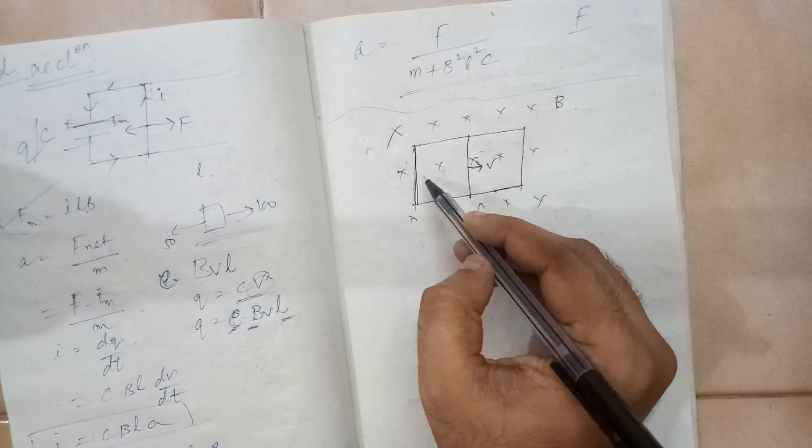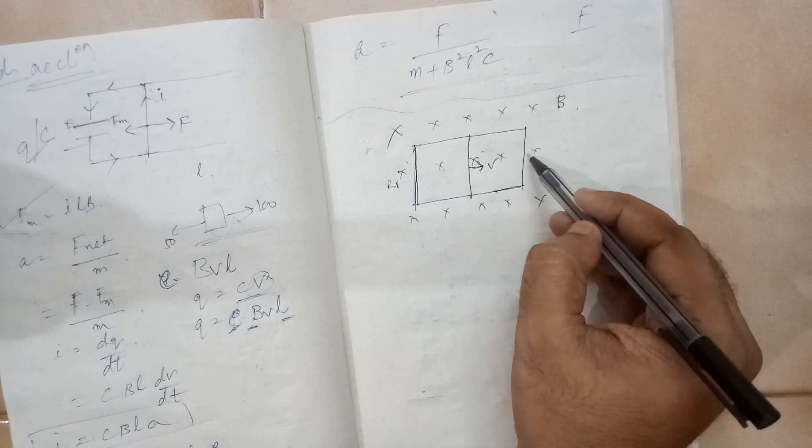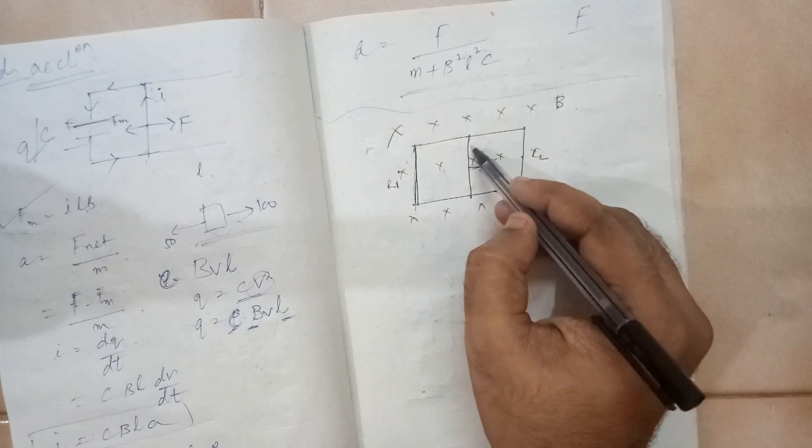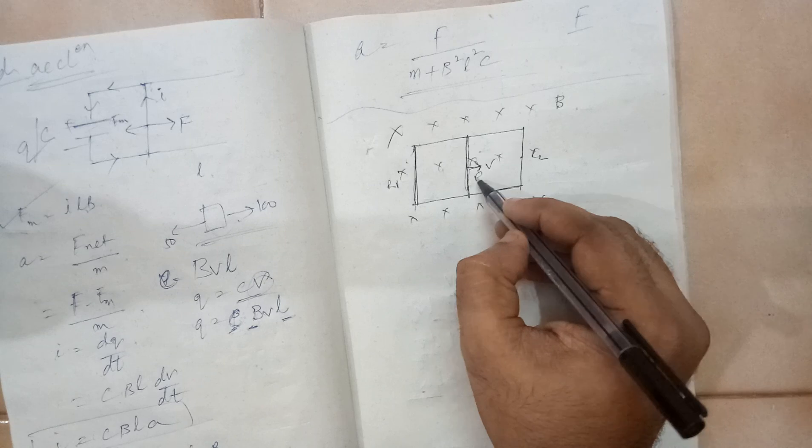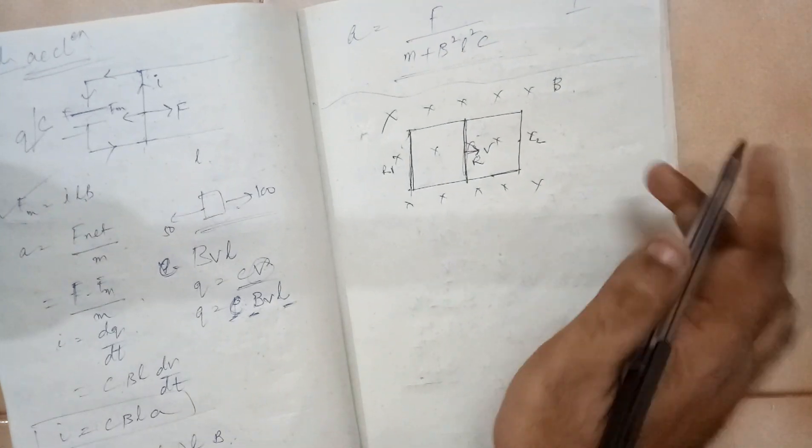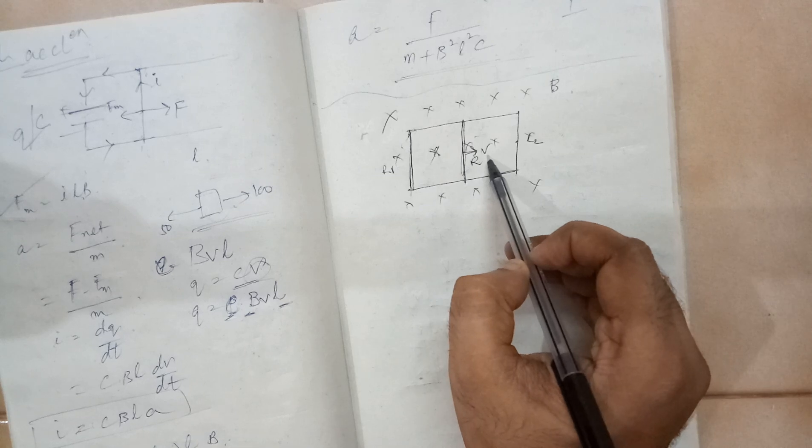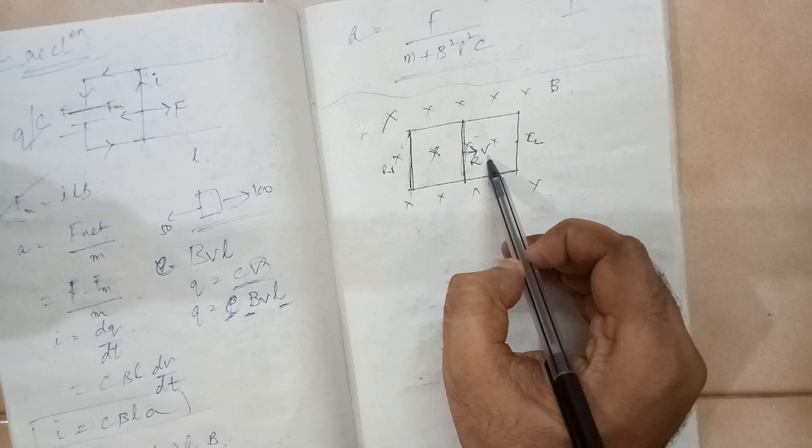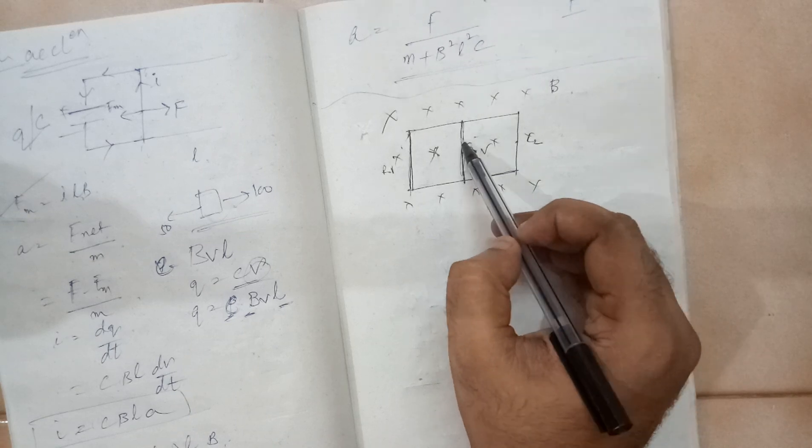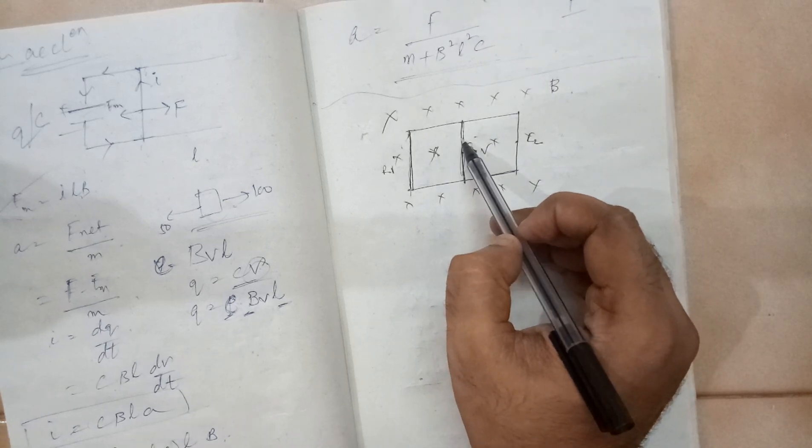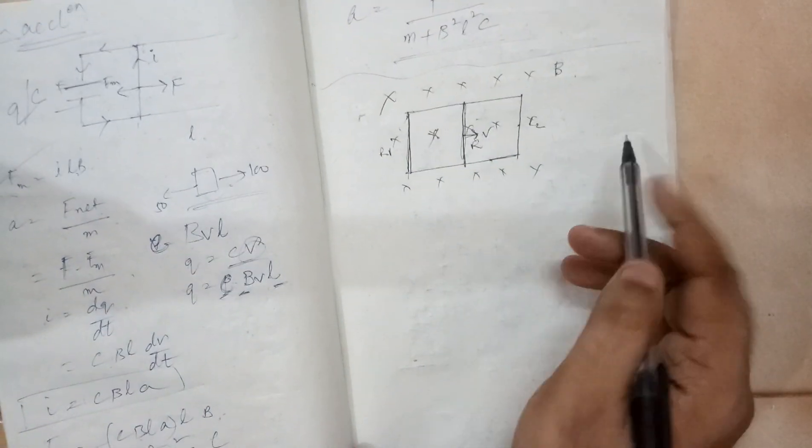This frame part has got a resistance of R1, this has got R2, and this wire has got an internal resistance of R. Obviously, because of the motion of the movable frame, there will be an induced current in this loop. So we need to analyze this system.